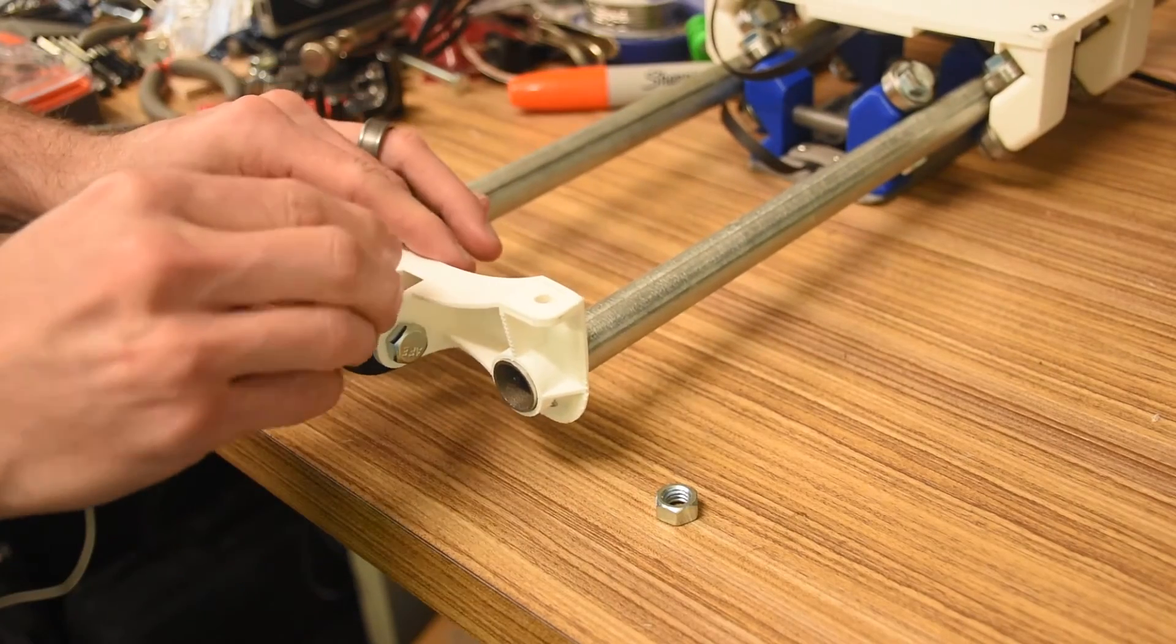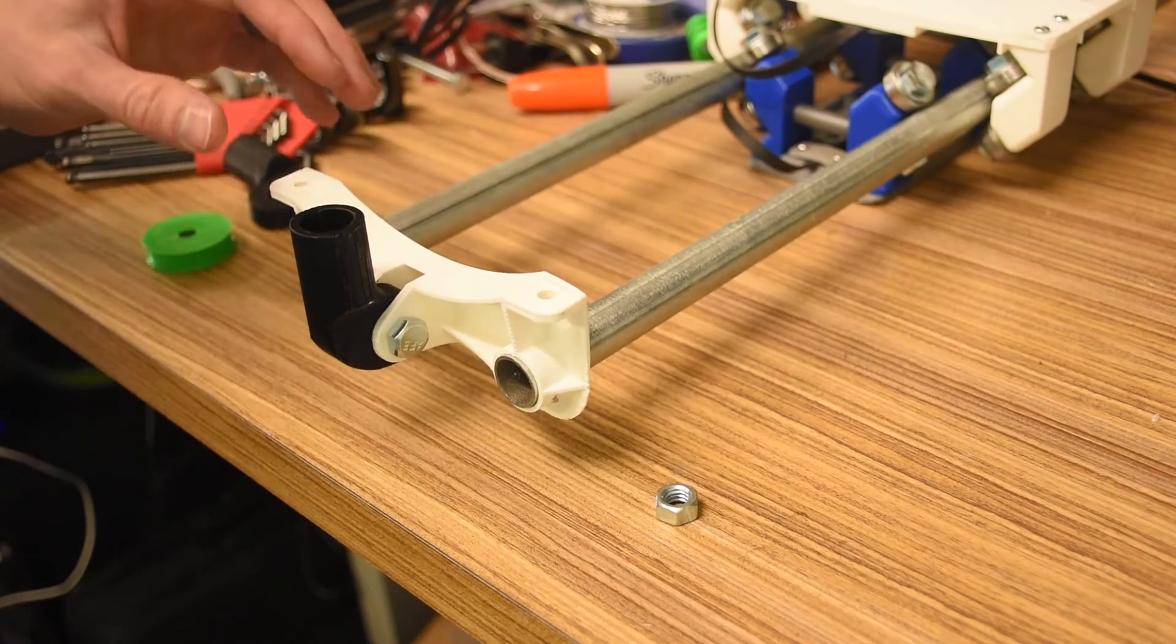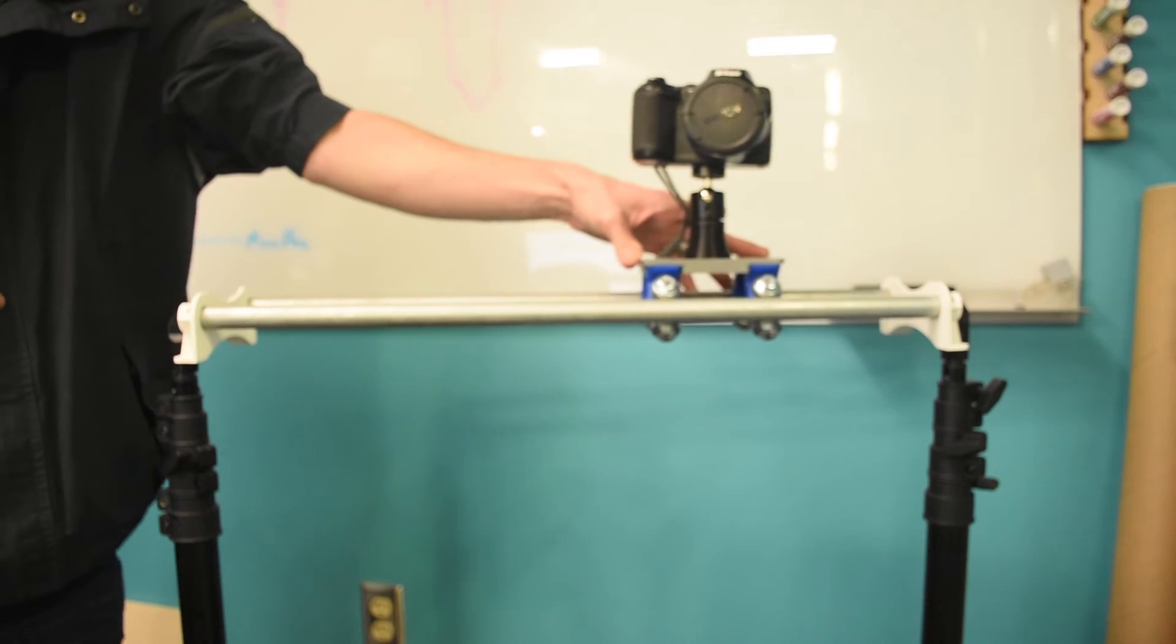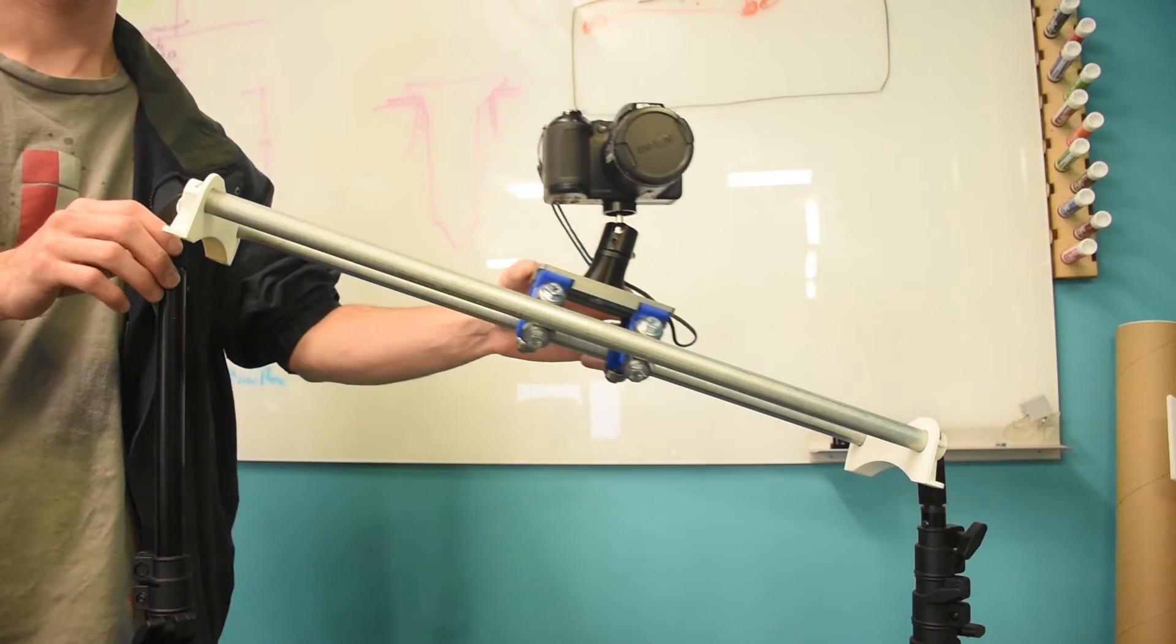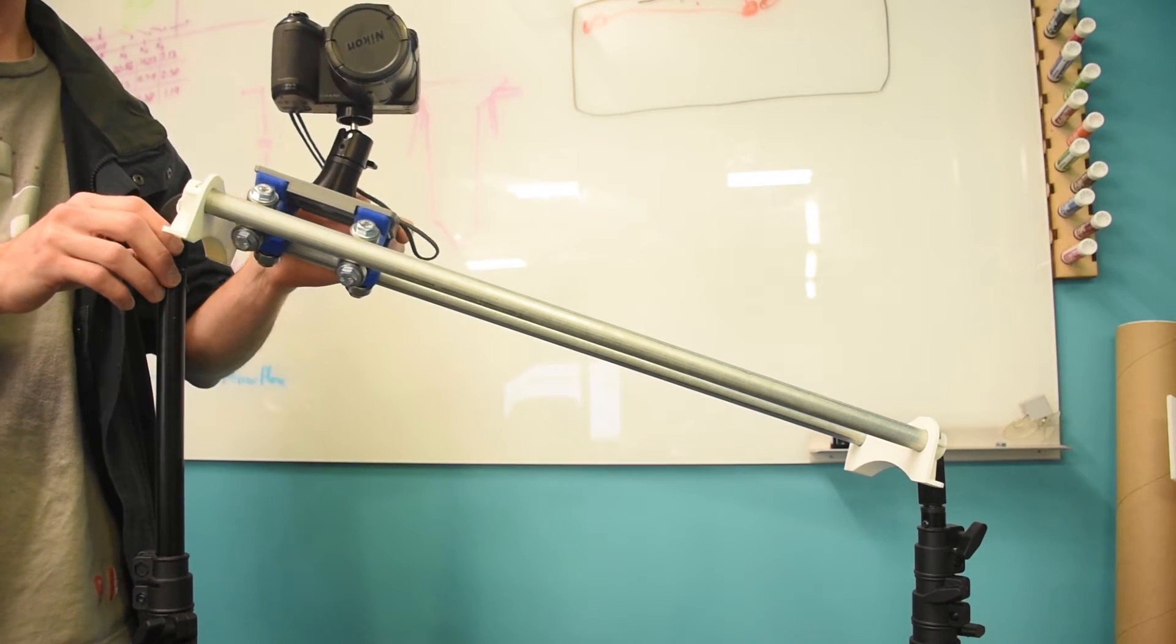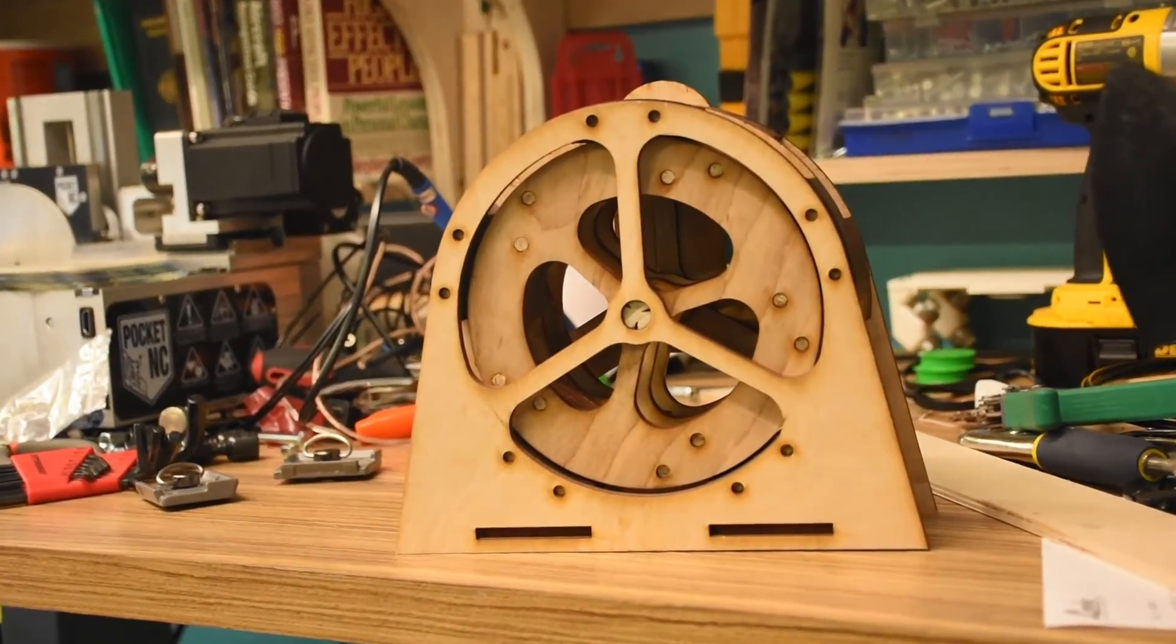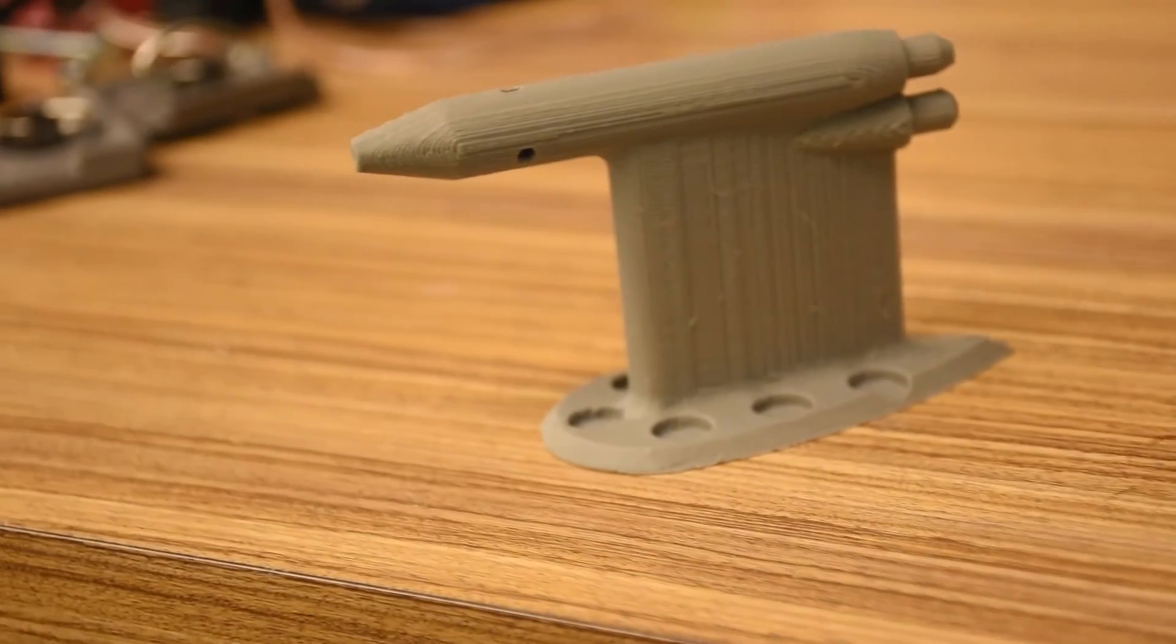I can also swap the wheels for these little stand adapters here, and then I can mount this thing on two of my lighting stands. And it doesn't have to be horizontal. I can get some really funky things here. I can do simulated crane shots, and of course I can do dolly zooms or just standard slider shots.